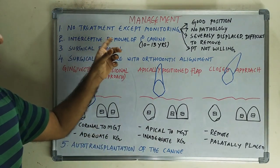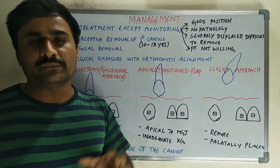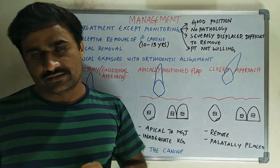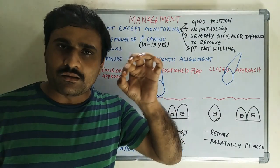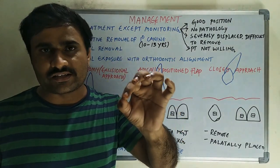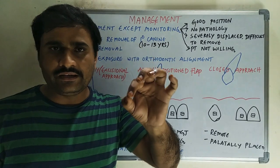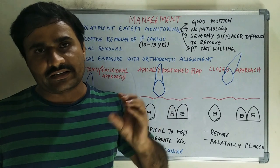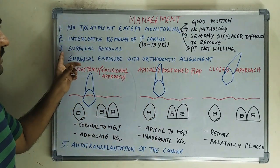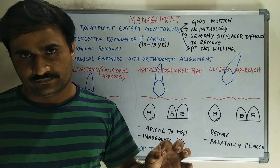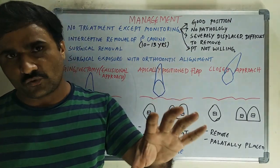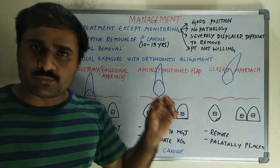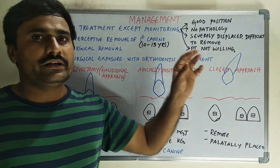The second option is interceptive removal of the primary canine — indicated if the patient is aged 10–13 years and there is no labial bulge. In those cases, you deliberately remove the primary canine to allow eruption of the permanent canine. The third option is surgical removal, for which we have already seen the indications. The fourth option is surgical exposure with orthodontic alignment.